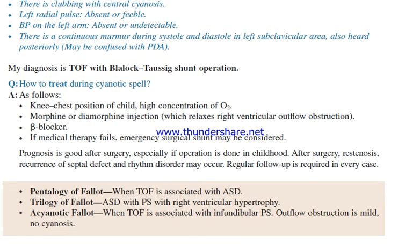Pentalogy of Fallot: when tetralogy of Fallot is associated with ASD. Trilogy of Fallot: ASD with pulmonary stenosis with right ventricular hypertrophy. Acyanotic Fallot: when tetralogy of Fallot is associated with infundibular pulmonary stenosis and outflow obstruction is mild — no cyanosis.